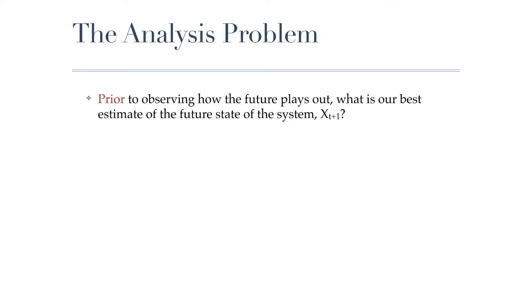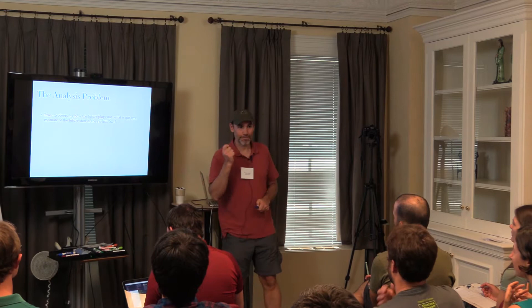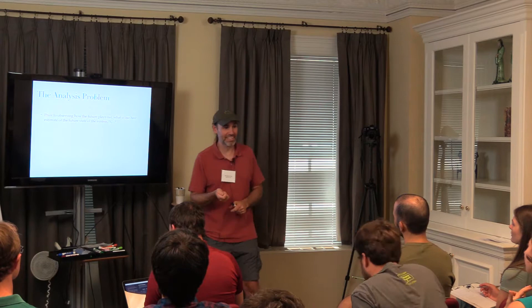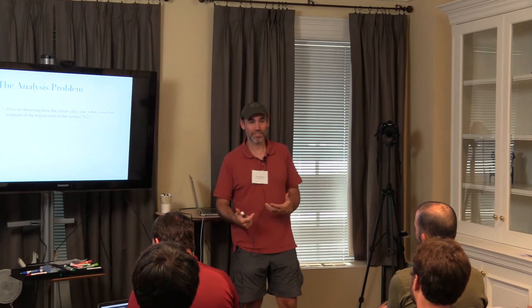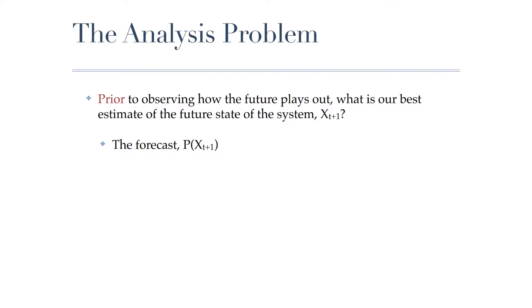Prior to observing how the future plays out, what is our best estimate of the future state of the system? If the state variable we're interested in is x, what's our best estimate of x at time t+1? If you felt x itself was your best predictor, you've subscribed to a random walk model. The key point is that prior to observing, our forecast is our best estimate of the future state. That's why we made it—everything we know about what we think is going to happen is built into our forecast.